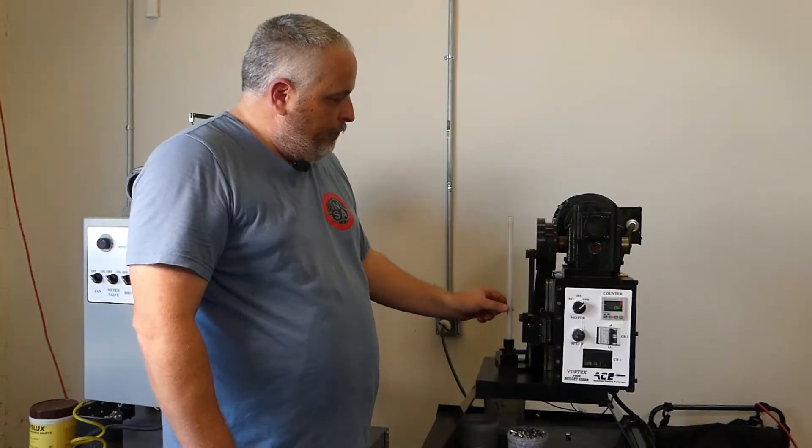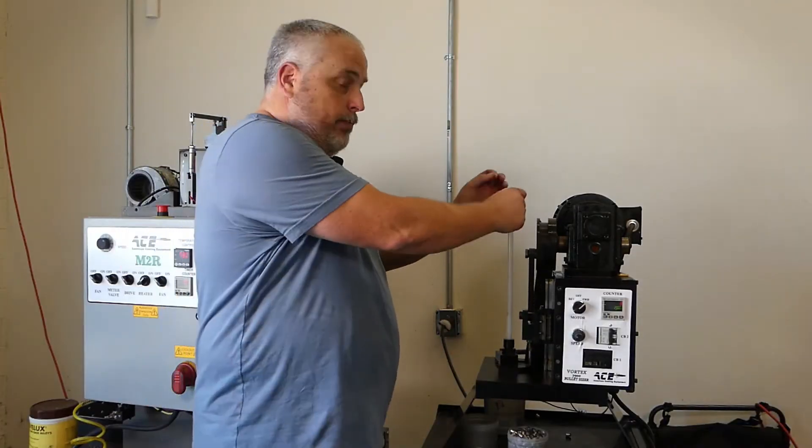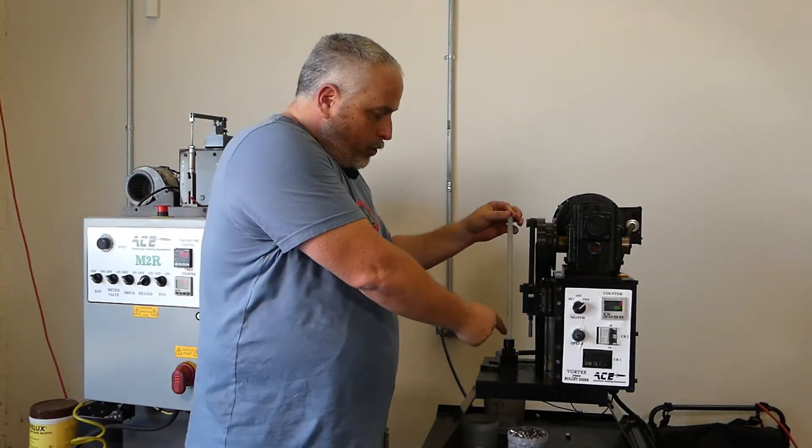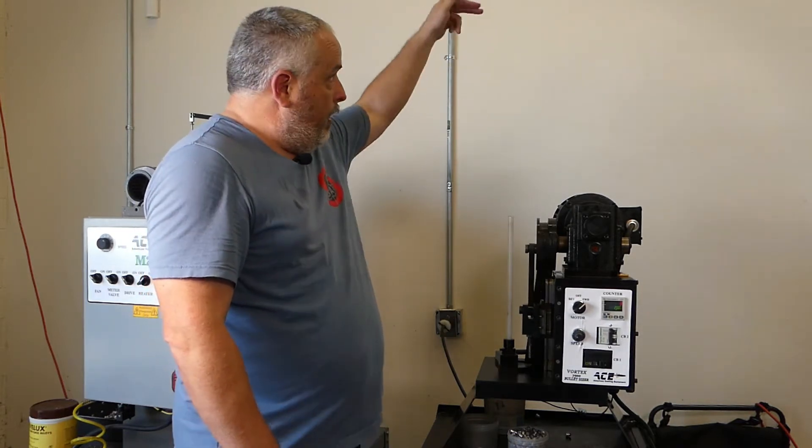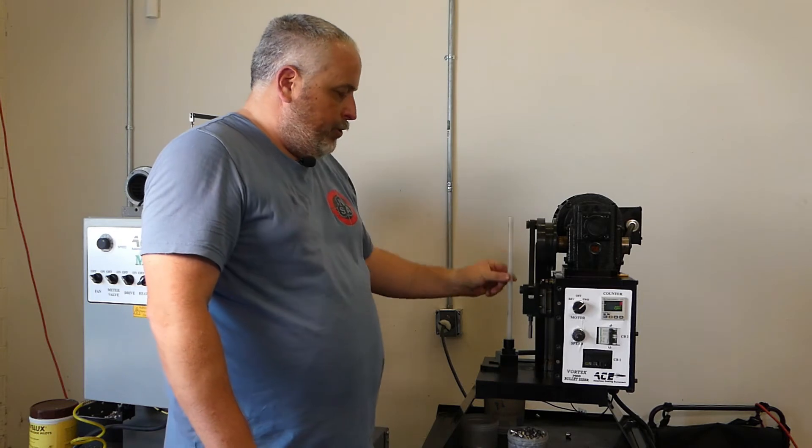You can feed this tube either by hand by putting the bullets straight down, nose down, or you can set up a collator to come in and collate the bullets nose down and feed your tube.